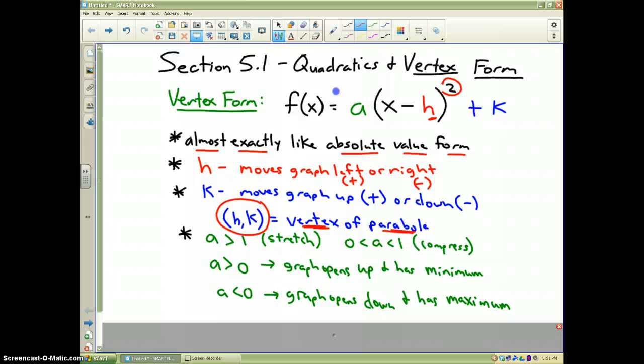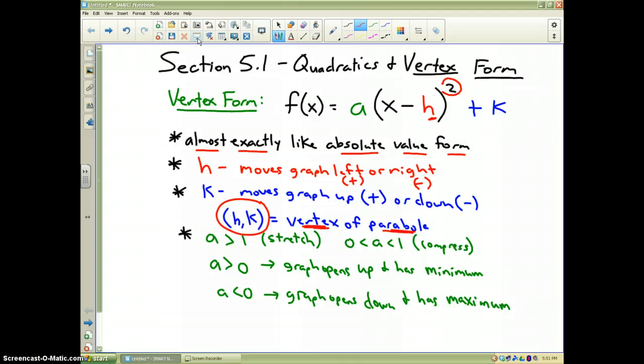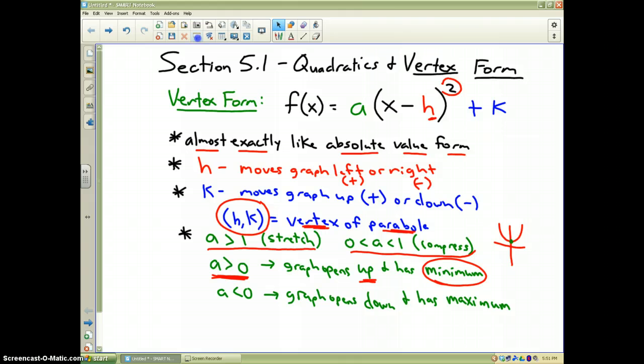And then finally, the a value. The a value does a lot in the case of quadratics. First of all, just like we've been studying all year long, if it's greater than 1, it stretches the graph, and if it's between 0 and 1, it compresses the graph. Now, when it deals with parabolas and quadratic equations, if the a value is positive, if it's greater than 0, the graph opens up, and most importantly, it has a minimum value. That's because the graph opens upward, and the bottom dot is the smallest y value for the function. So it's got a minimum. You're going to see that a lot, so try and memorize that.